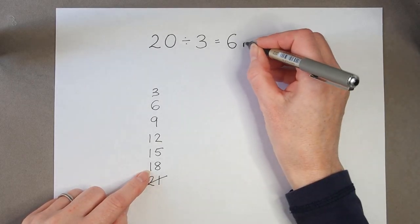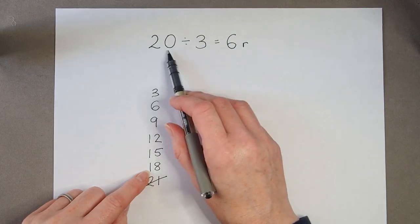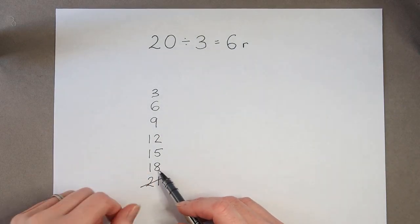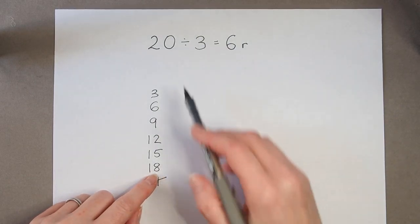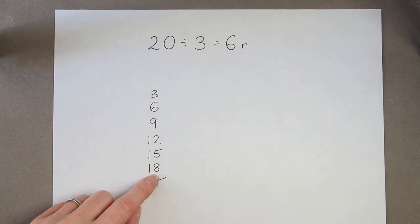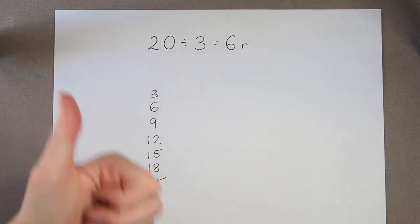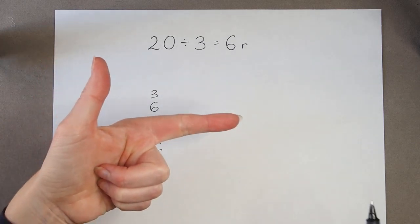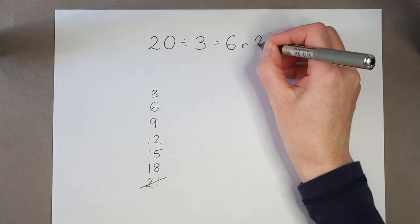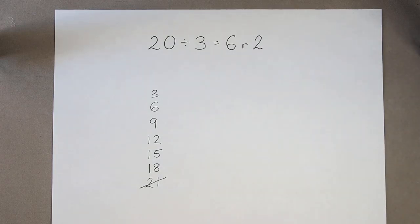And it's not exact, because 3 times 6 is not 20, it's 18. So I know I need to count on from 18 to see how many more it is to get to 20. So 18, 19, 20. So it's 2 more to get to 20. So my answer is 6 remainder 2.